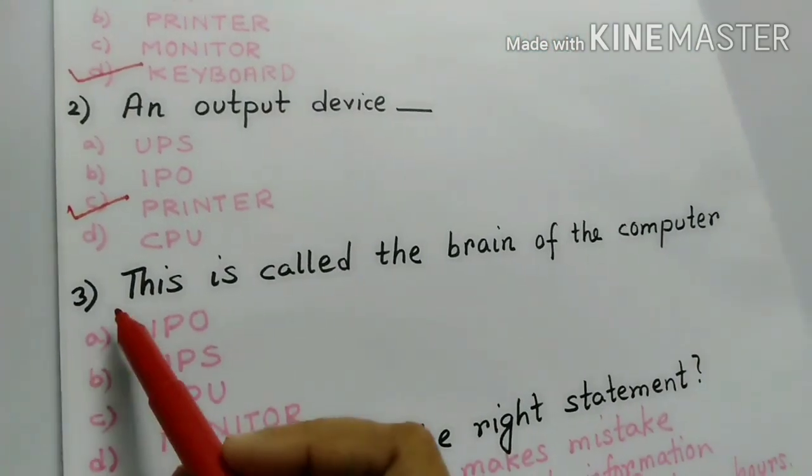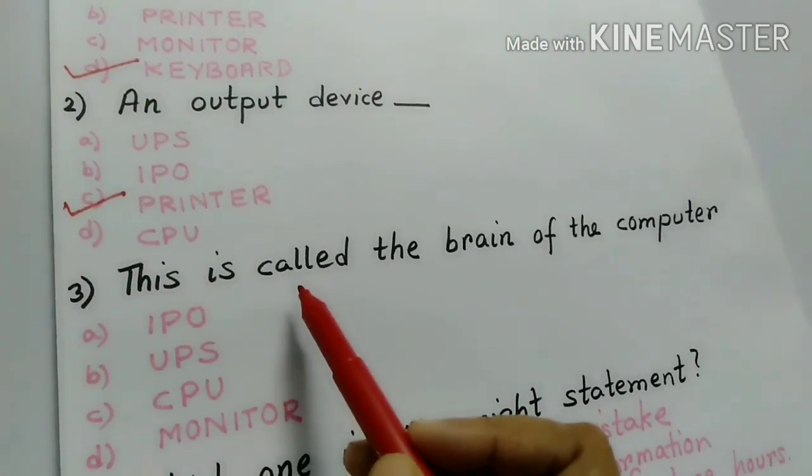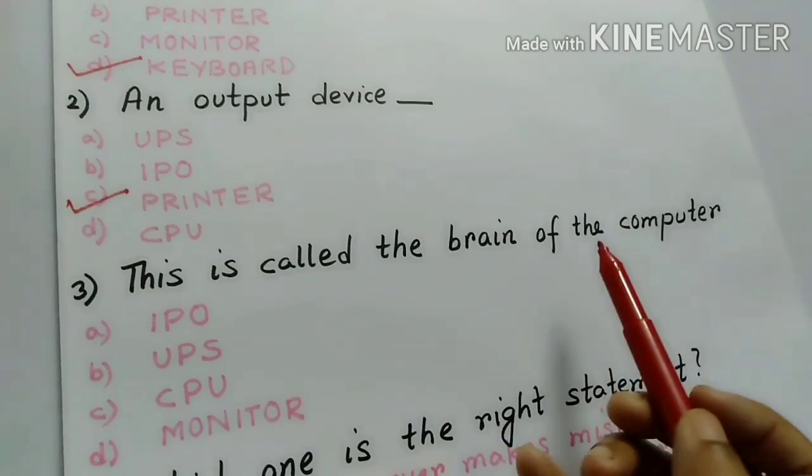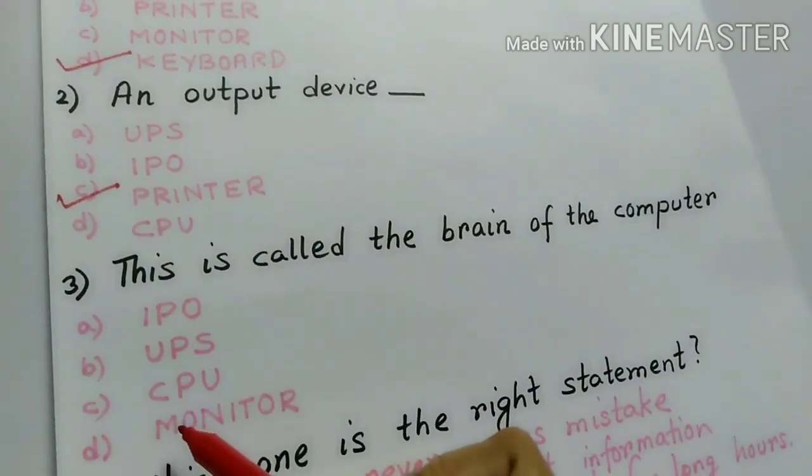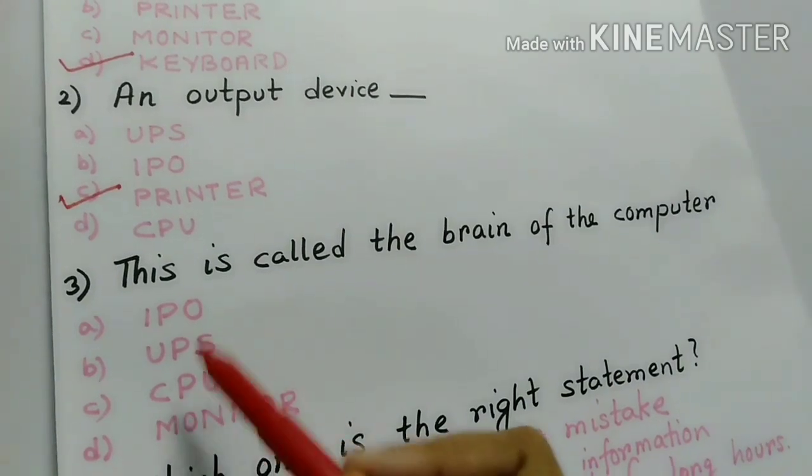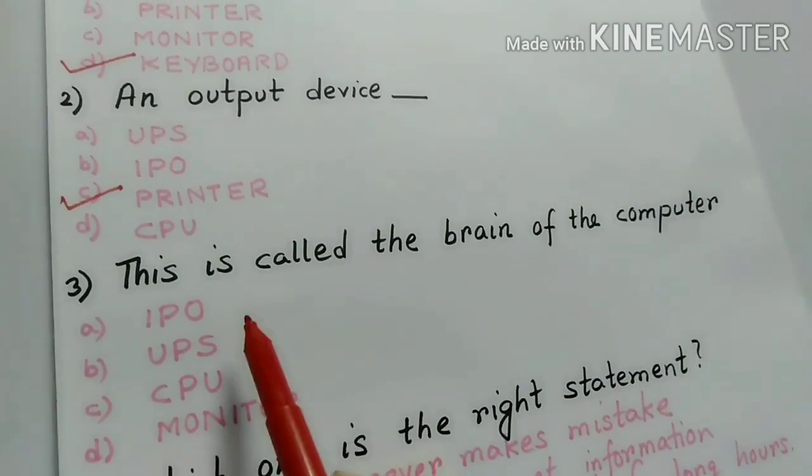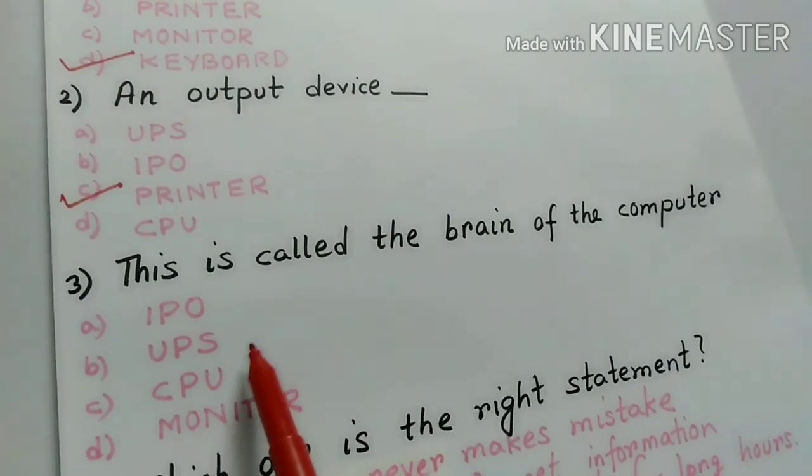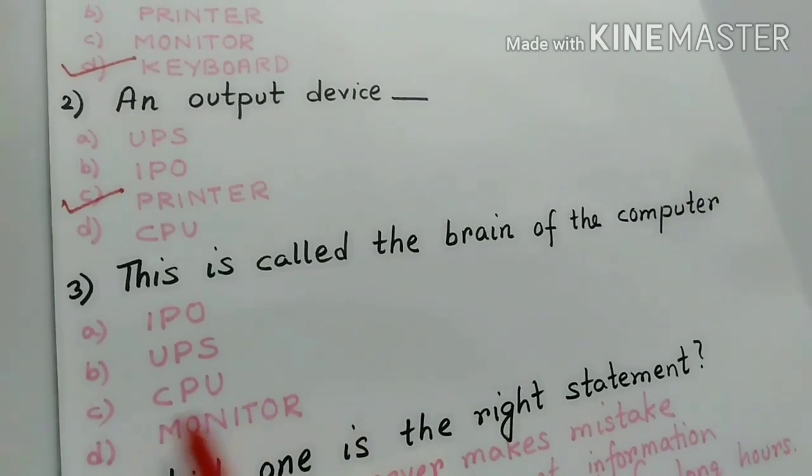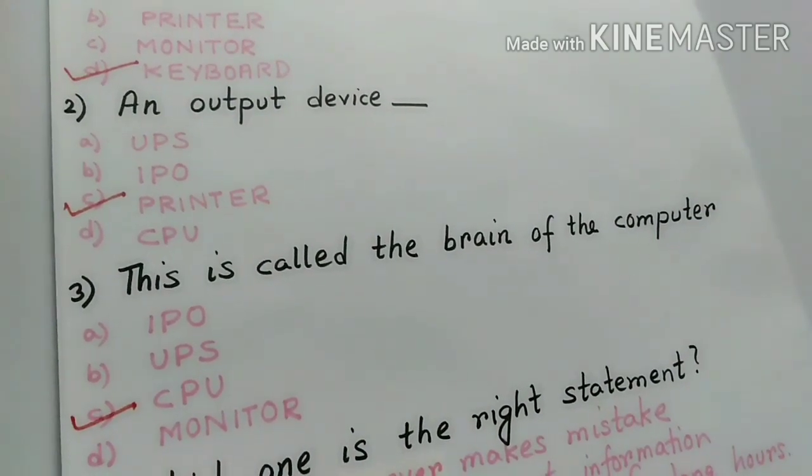Number 3. This is called the brain of the computer. Which one is called the brain of the computer? Four options are given here. IPO, UPS, CPU and Monitor. CPU is called the brain of the computer.